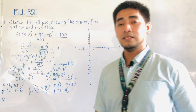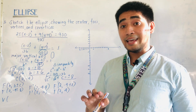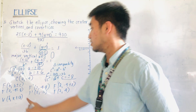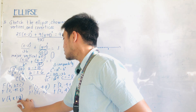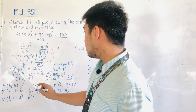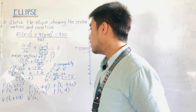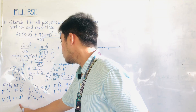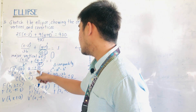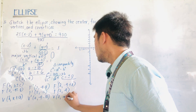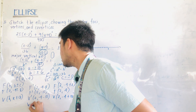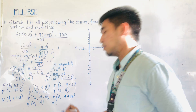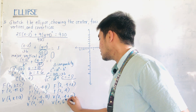For the vertices, they also lie on the vertical axis. The formula is (h, k ± a). So V prime equals (2, −4 minus 10), which is (2, −14). And V equals (2, −4 plus 10), which is (2, 6).